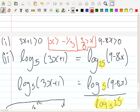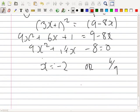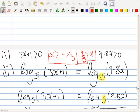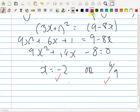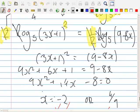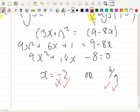So, if I was to go back to my two answers down the bottom, I have to check it. Is this one more than minus 1 over 3? And is it less than 9 over 8? This one fails because it doesn't meet both requirements, and this one passes. So, we only have one answer. X is equal to 4 over 9.